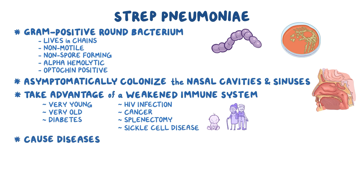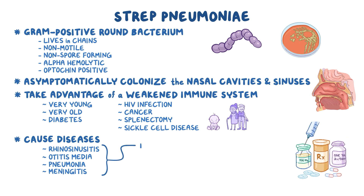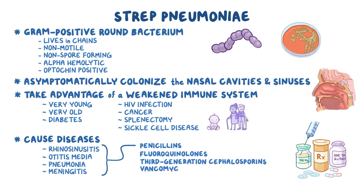They cause diseases such as rhinosinusitis, otitis media, pneumonia, and meningitis. The treatment of infection with strep pneumoniae involves the use of penicillins, but in the case of resistant strains, fluoroquinolones, third-generation cephalosporins, and vancomycin can be used.